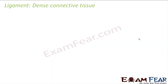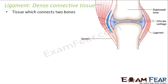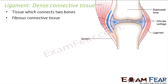We'll move on to the next connective tissue, which is ligament. Ligament is a dense connective tissue — a connective tissue that has more fibers in its extracellular matrix, so it is also known as fibrous connective tissue. A ligament is a tissue that connects two bones. Since it connects two bones, it is a connective tissue.